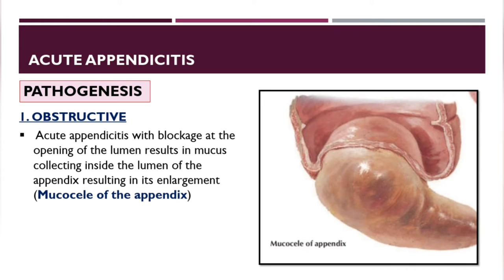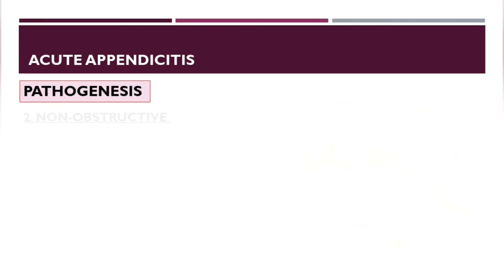Blockade at the opening of the lumen results in mucus collecting inside the lumen of the appendix, causing its enlargement — referred to as a mucocele of the appendix, or mucoappendix.